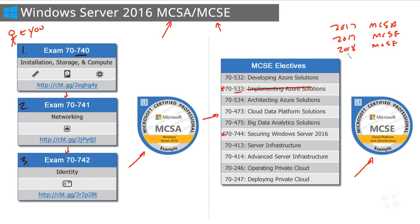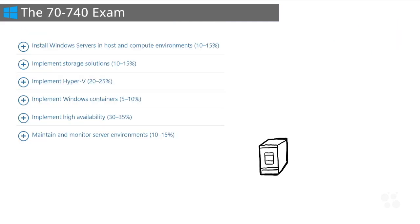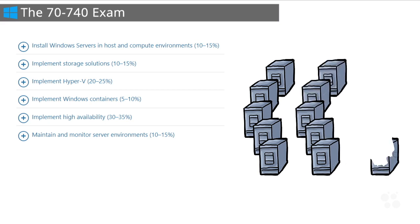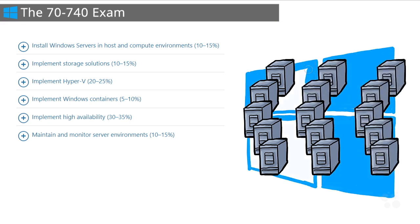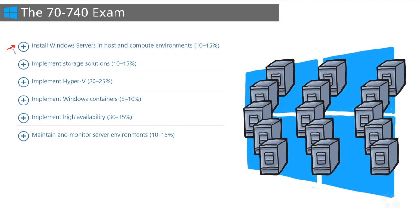Let's talk about 70-740, our primary focus. This covers installation, storage, and compute across six primary areas. First, installation: we'll learn how to install Server 2016 with various options — server with desktop experience, server core, and the new nano server deployment option. We'll also look at creating images to dramatically speed up OS deployment. The next section covers storage solutions: configuring local storage, disks, volumes, file systems, then server storage using storage spaces and the new storage replica feature, plus data deduplication.